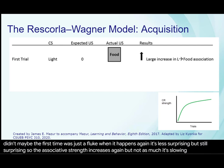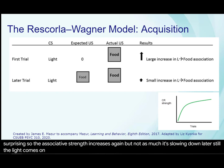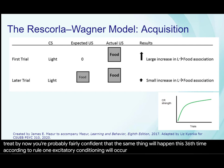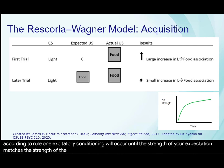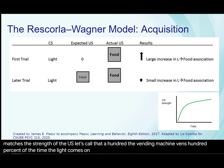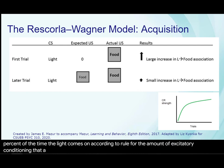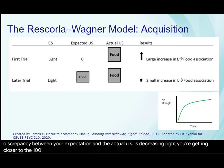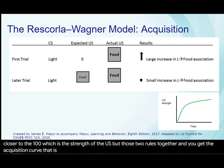Excitatory conditioning is happening, but it's slowing down. Later still, the light comes on again. Past 35 times you've seen the light, the vending machine has produced a treat. By now, you're probably fairly confident that the same thing will happen this 36th time. According to rule one, excitatory conditioning will occur until the strength of your expectation matches the strength of the US — let's call that 100. According to rule four, the amount of excitatory conditioning that occurs on each subsequent trial will get smaller and smaller because the discrepancy between your expectation and the actual US is decreasing — you're getting closer to 100. Put those two rules together and you get the acquisition curve that is typical of classical conditioning.